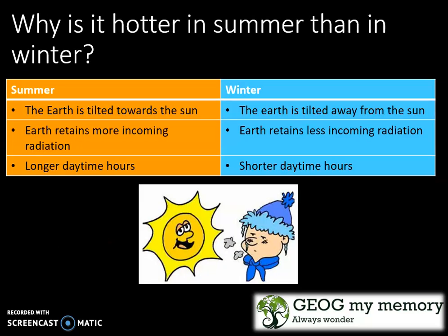But why is it hotter in summer than in winter? Summer involves the Earth being tilted towards the sun. Therefore, Earth retains more incoming solar radiation, causing longer daytime hours. In winter, the Earth is tilted away from the sun. Therefore, Earth retains less incoming solar radiation, causing shorter daytime hours.